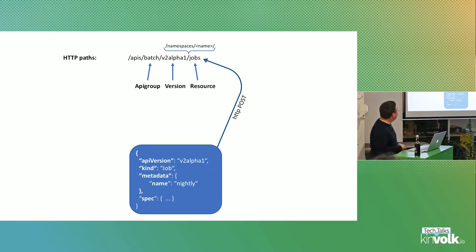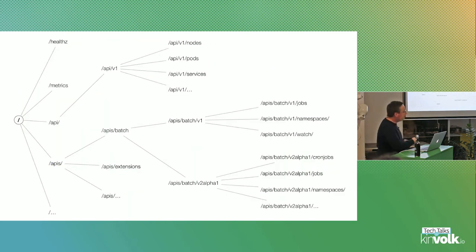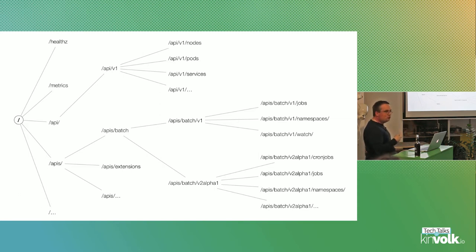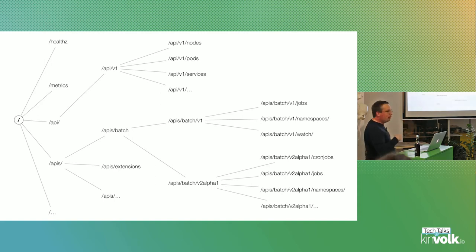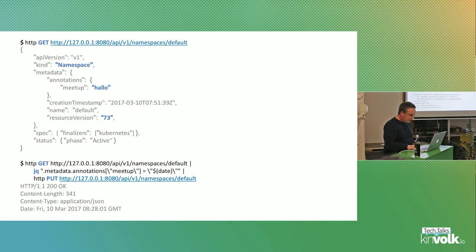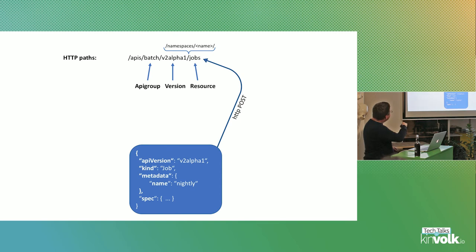Now about URL structure in more detail. The API server has one branch called 'api' with version 'v1' containing all the old classic objects — that's called the core group. It's a bit special because nobody thought about API groups a year and a half ago, so this one is its own branch, not below 'apis'. It will probably go away at some point. Everything else is below 'apis'.